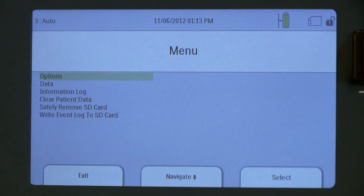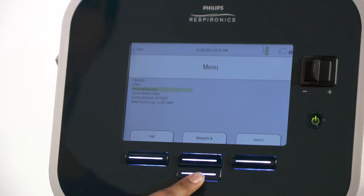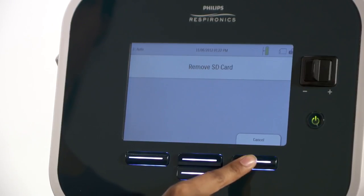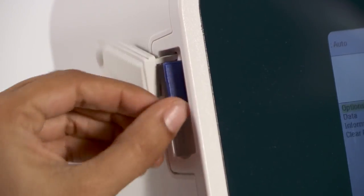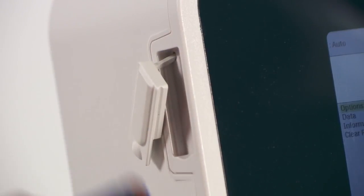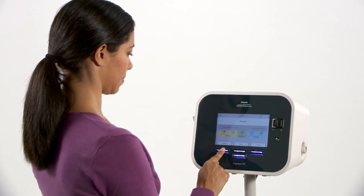You will see a list of items. Use the down button under navigate to move down the list until safely remove SD card is highlighted. Press the right button under select. A remove SD card message will appear to let you know that the card can be removed. Press the left button under exit to return to standby.